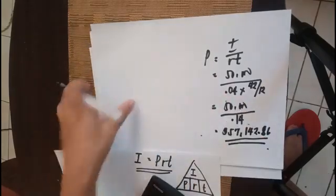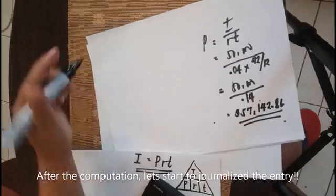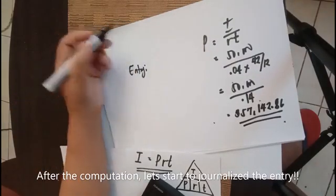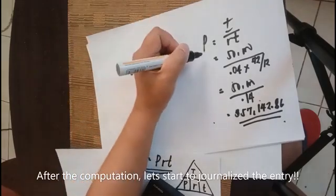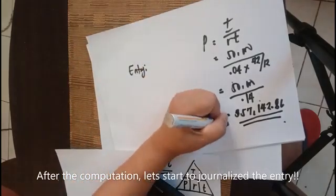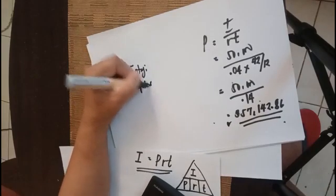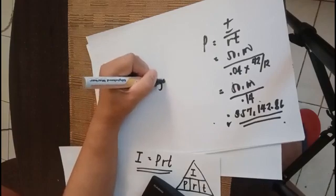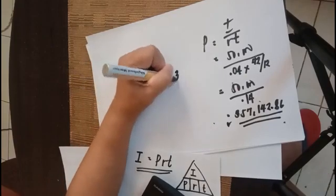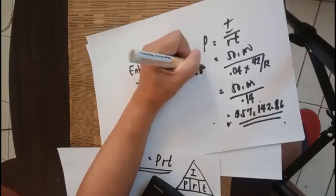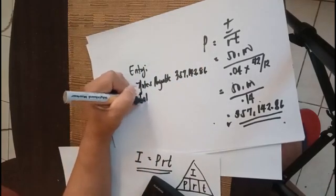Okay, accounting entry. So our entry will be payment of accounts. We have the original principal of $357,142.86, so we need to debit notes payable or accounts payable for $357,142.86, add the interest expense of $50,000.